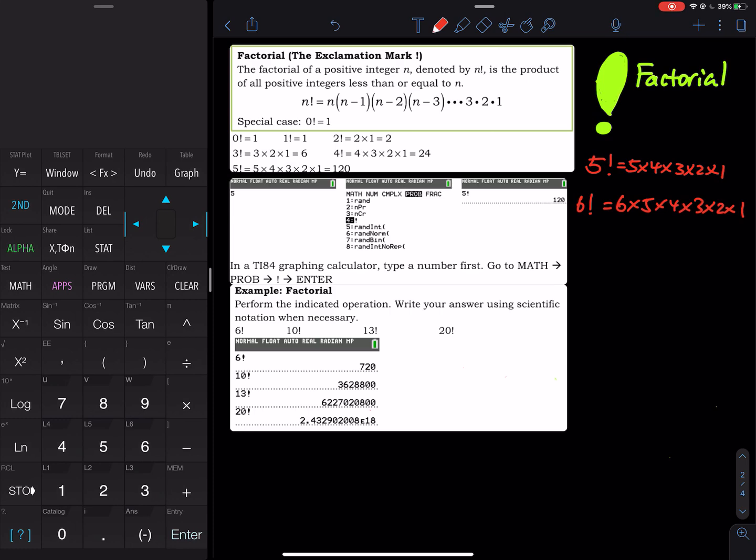We do have a special case: 0 factorial is equal to 1. So that is a special case. Now the thing is for 5, 6 factorial, we can type that out. So 5 times 4 times 3 times 2 times 1. Look at my calculator, that equals to 120.